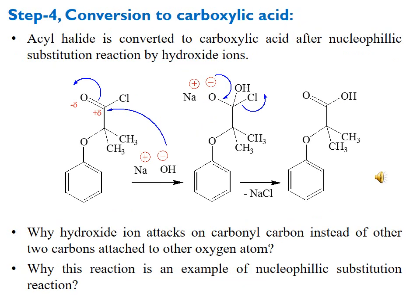Step four of the original reaction: conversion of the previously synthesized acyl halide into carboxylic acid. Hydroxide ion acts as nucleophile, attacks the carbonyl carbon of the acyl halide, the pi bond breaks, oxygen gets the negative charge forming an alkoxide intermediate, and this negative charge moves back to form the double bond. Chloride, being a better leaving group than hydroxide, leaves and we get the carboxylic acid moiety with sodium chloride as byproduct.